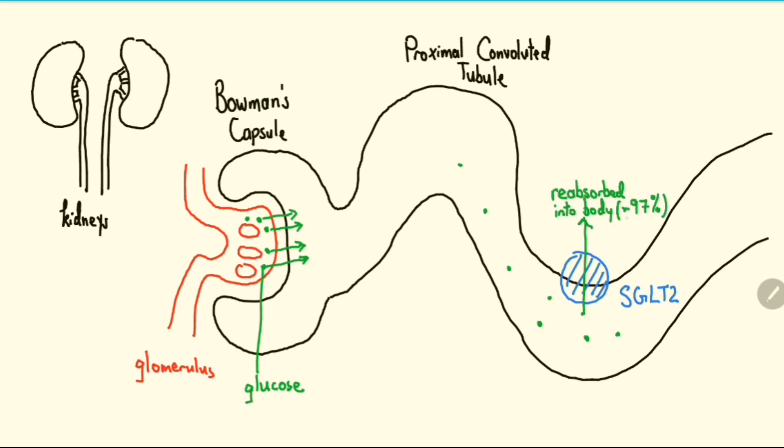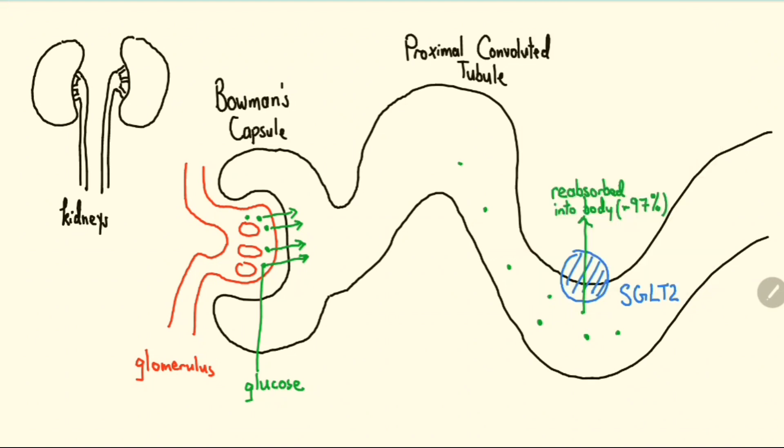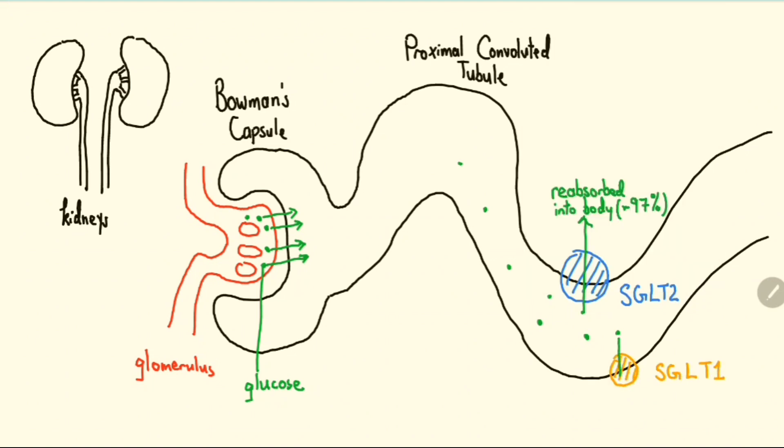And the remaining 3% is reabsorbed through another protein called SGLT1. As a result, very little glucose is excreted through the urine.